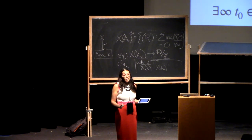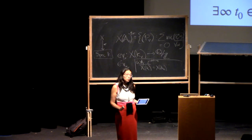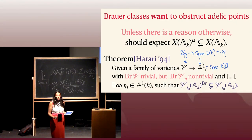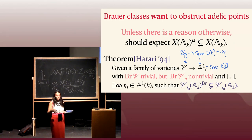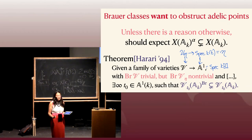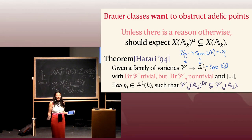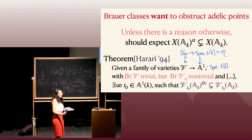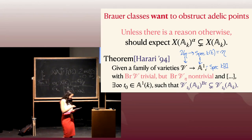Colliot-Thélène, Sansuc, and others have conjectured that for all rationally connected varieties, the Brauer-Manin obstruction is the only obstruction. What is known falls far short of that. Olivier Wittenberg and Yonatan Harpaz have the best results to date on when it is the only obstruction. But we also know it's not the only obstruction all the time — there are examples by Skorobogatov and Poonen with variations after that.